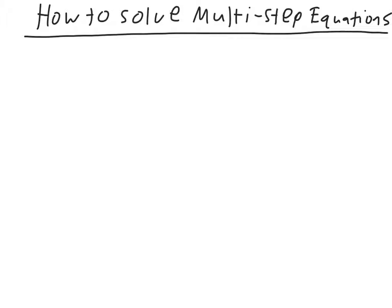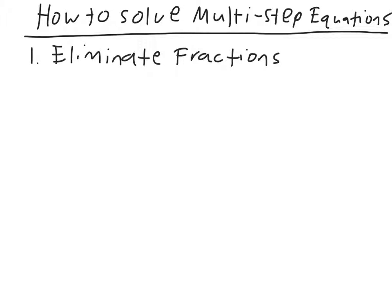Alright, so first I'm going to go over the steps of how to solve a multi-step equation. The first step is to eliminate any fractions that you have in your equation. The way to do that is to multiply everything by the denominator of the fraction, or a number that all of the denominators can multiply into.